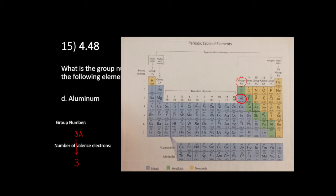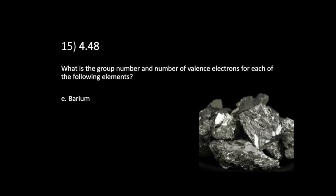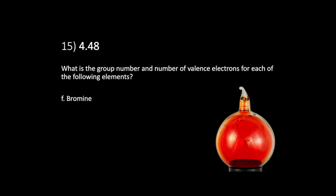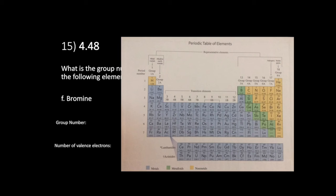Aluminum has three valence electrons, kind of like boron, so it shares similar properties to boron and reacts with similar things. How about barium? Barium is at the bottom left of the periodic table in group 2A, so it has two valence electrons. How about bromine? Bromine is at the far right in group 7A, so bromine has seven valence electrons — seven bumps on the outside determining how it sticks to other atoms.